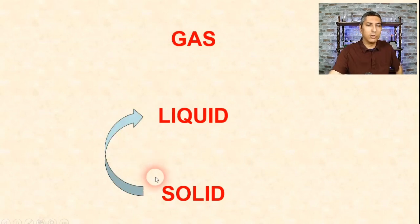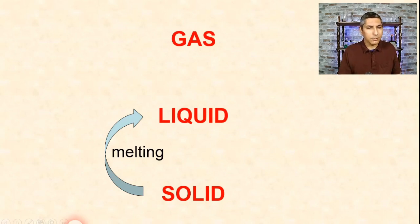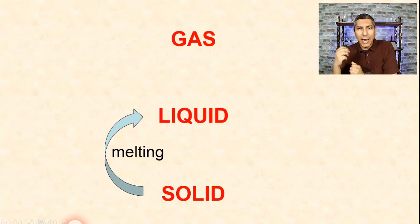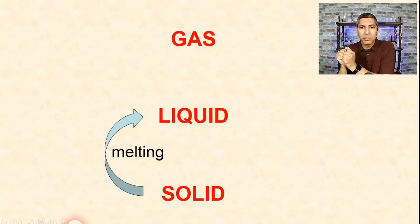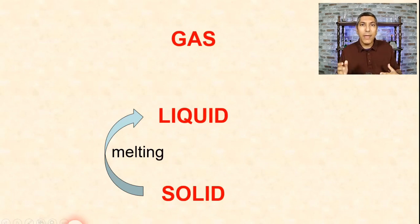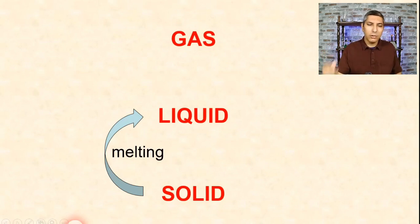If we change from a solid to a liquid, that phase change is called melting. A solid has molecules that are very close to each other and don't have a whole lot of freedom of motion — they're basically just vibrating. As we add heat, those particles vibrate faster and faster until they have enough energy to break free and slip and slide around each other, turning into a liquid.